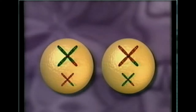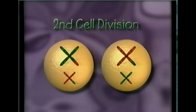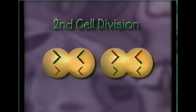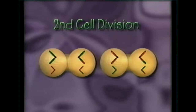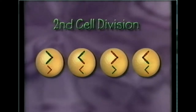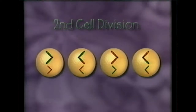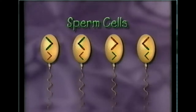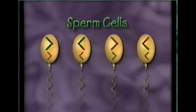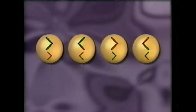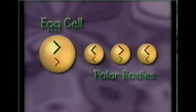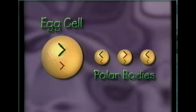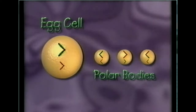Next, these two cells divide to produce a total of four cells, each having just half the chromosomes of the original parent cell. In the male organism, these four cells become sperm cells. In the female, the division is unequal, resulting in one egg cell and three polar bodies. Only the single egg cell survives.